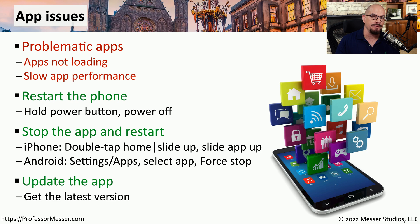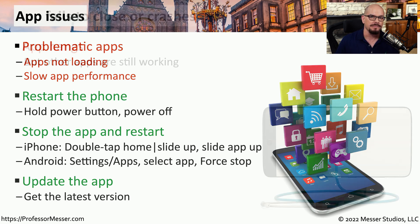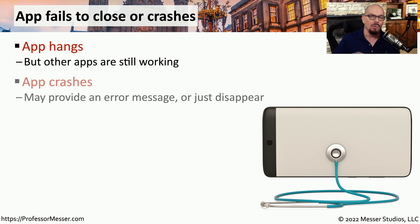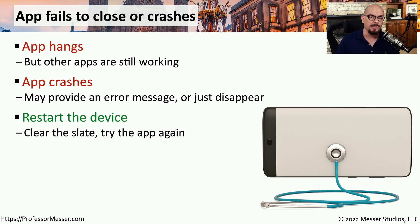If this continues to happen, there may already be a bug fix for this, so you might want to check the app and see if there's an update. There might also be times when you're using an app and suddenly it stops working, but all of the other parts of your device and all of the other apps seem to be working normally. Or maybe you're using the app and suddenly it disappears, or you get an error message saying there was some type of issue. The first step to troubleshooting this would be to start with a clean slate, so we want to restart our mobile device and then try using the app again.